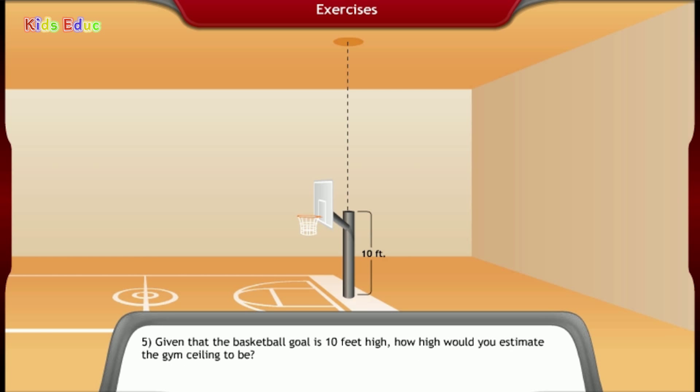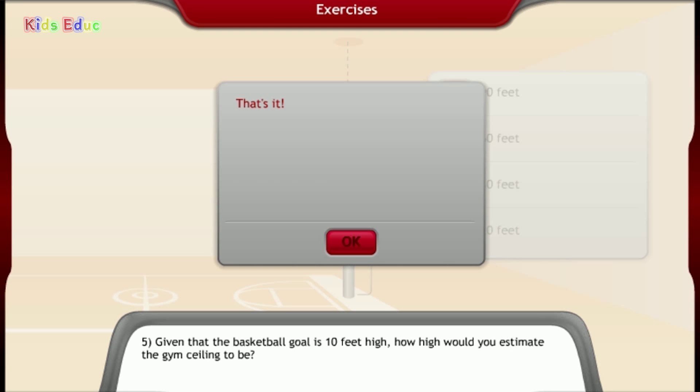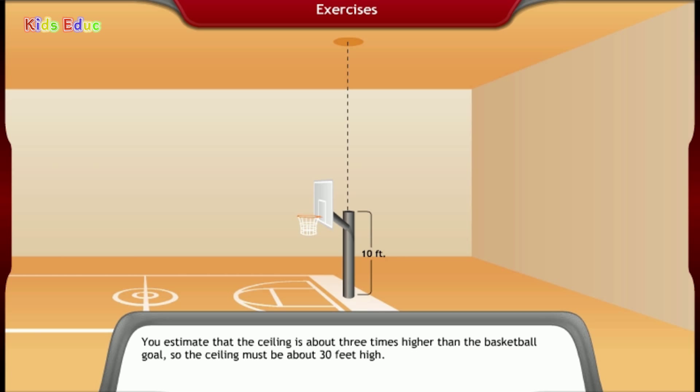Number 5, given that the basketball goal is 10 feet high, how high would you estimate the gym ceiling to be? 90 feet, 60 feet, 30 feet, 10 feet. 30 feet. That's it. You estimate that the ceiling is about three times higher than the basketball goal. So the ceiling must be about 30 feet high.